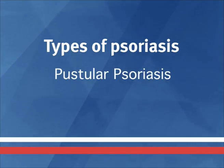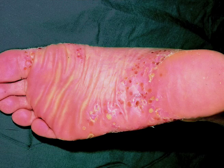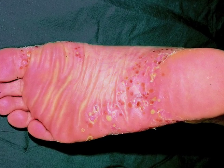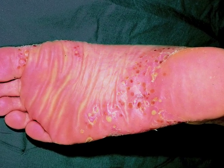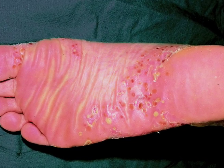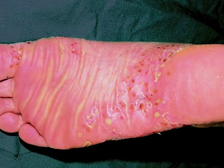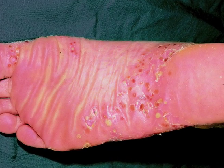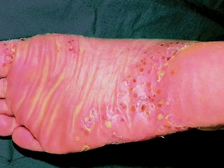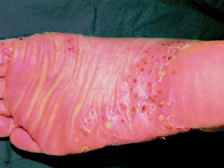Pustular psoriasis. This type of psoriasis is characterized by redness, scaling and pustules, normally affecting the palms and feet. However, in rare cases, large areas of the body can be affected.